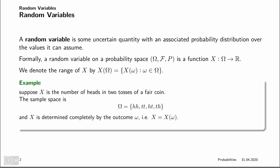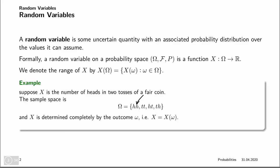And x would now take one of these outcomes — for example, heads-heads — and count the number of heads and yield that as an output. For example, heads-heads would be a two. Because these outcomes all have a probability, also the values of x have a probability associated to them.